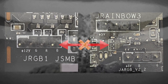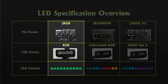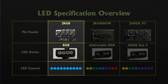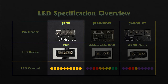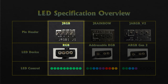In terms of LED control, the LED beads on RGB strips are not addressable. So the RGB strips connected to a J-RGB header will be considered as a single LED bead, and the whole LED strip is going to display the same color.